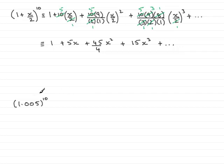Now in order to do that, we've got to choose an appropriate value of x. And so you'll notice that we've got the same power here, 10, 10. So to choose an appropriate value of x, we need 1 plus x over 2 to equal 1.005.